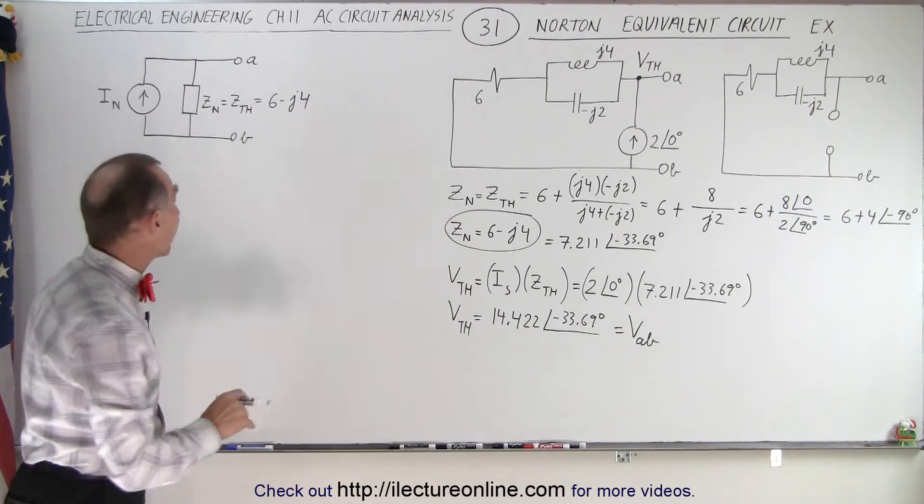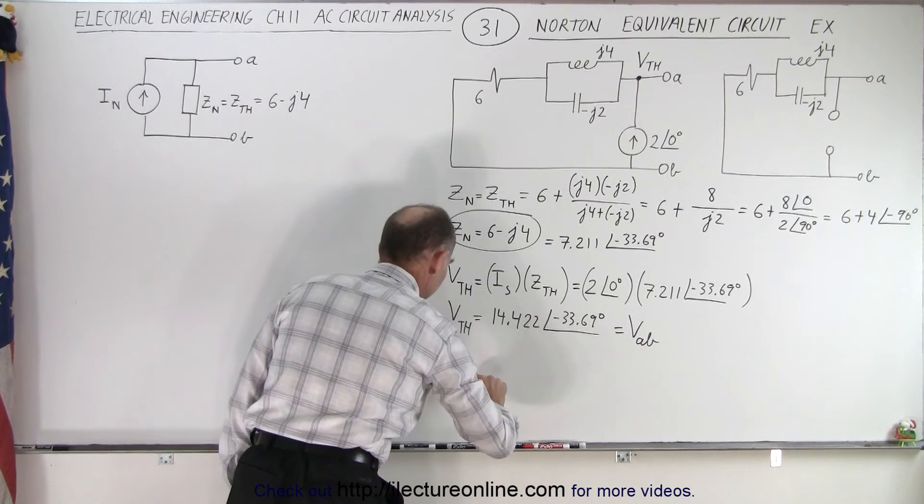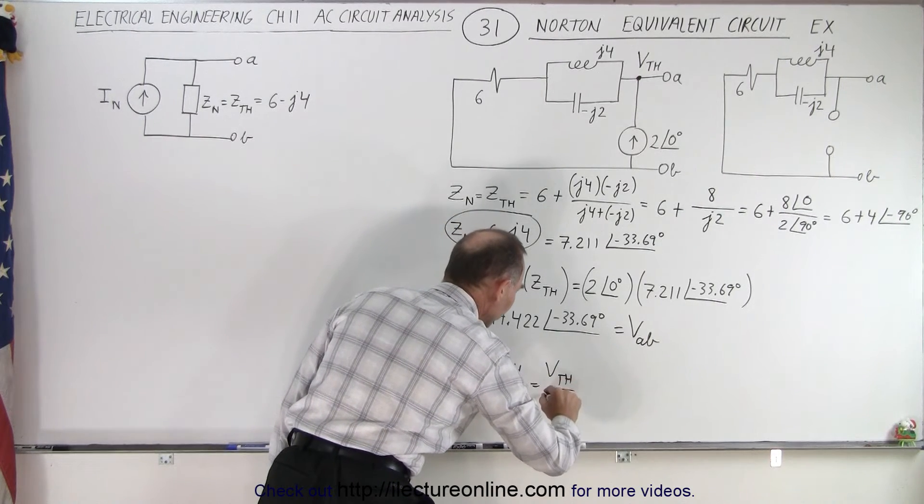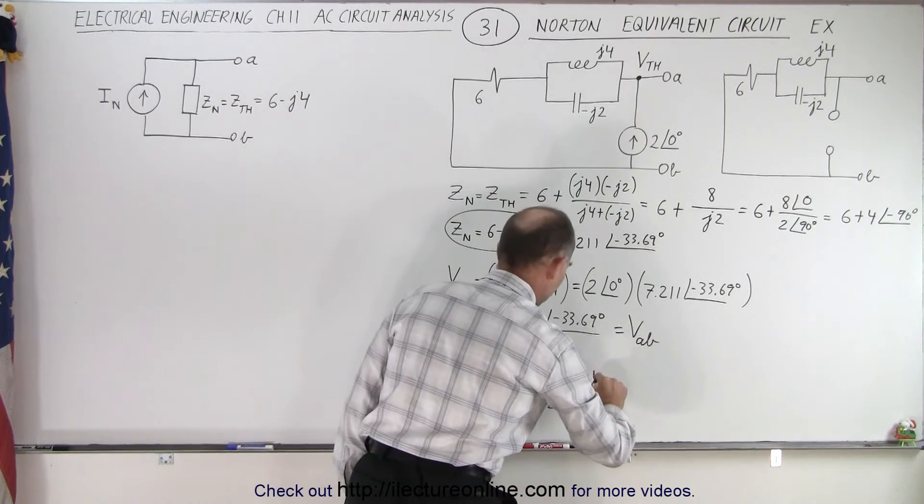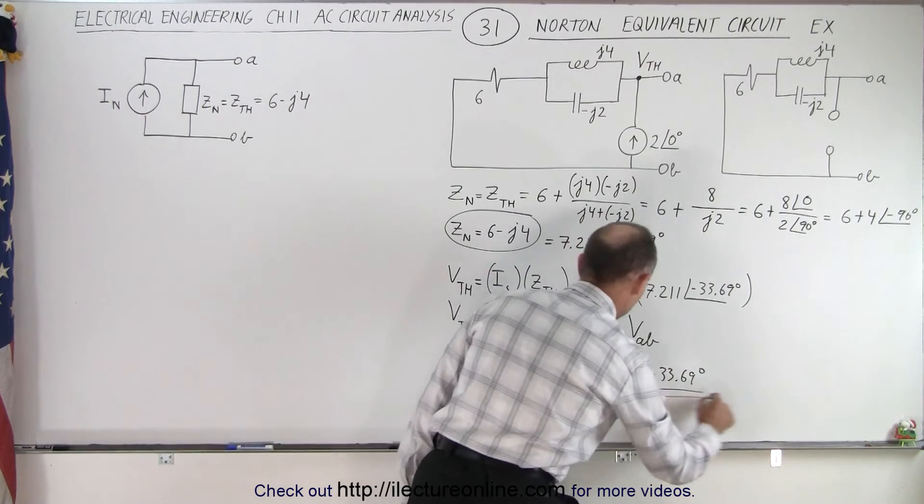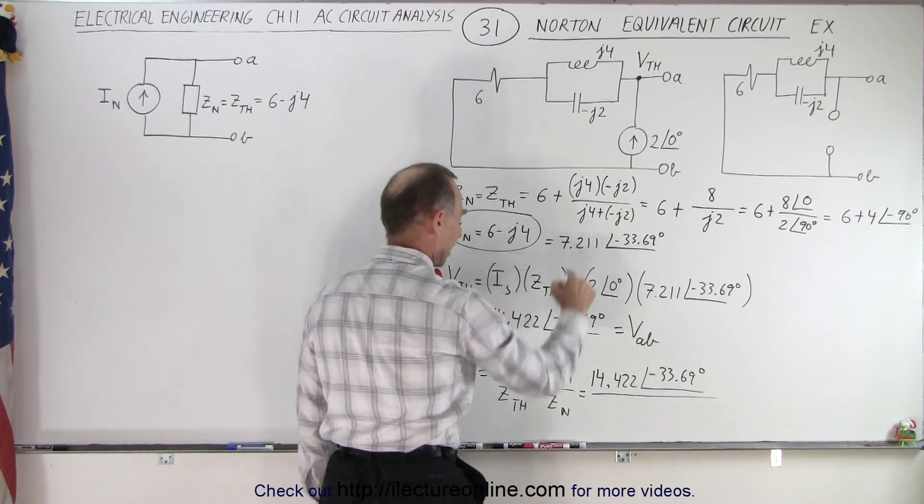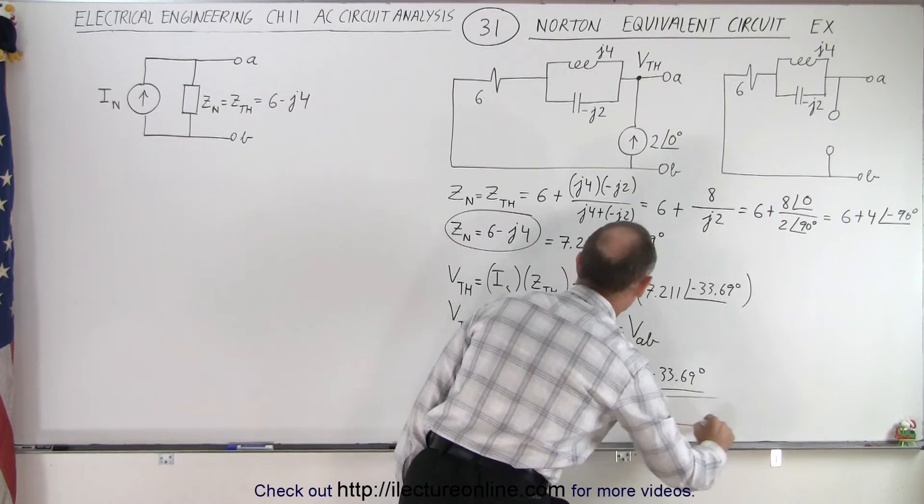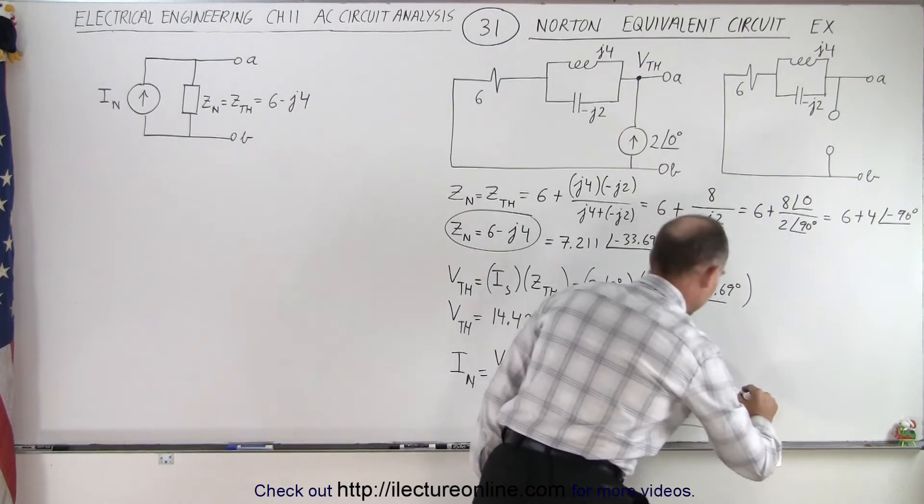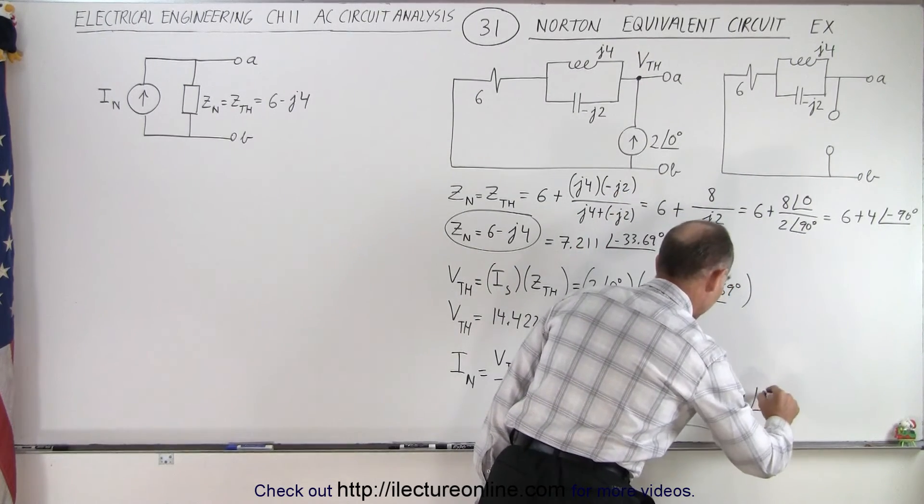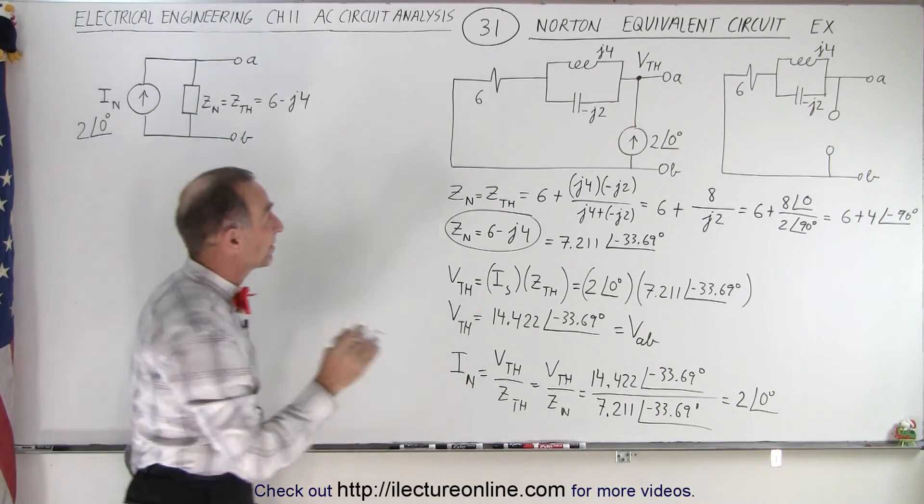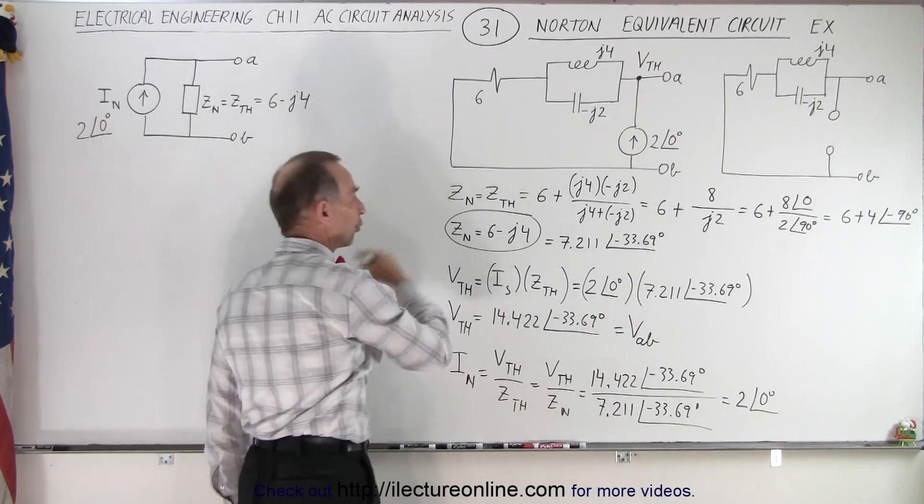Of course, that doesn't give us the Norton current yet. To find the Norton current, I_Norton equals the Thevenin voltage divided by the Thevenin impedance, which is the same as the Norton impedance. We take 14.422 with a phase angle of minus 33.69 degrees and divide it by 7.211 with a phase angle of minus 33.69 degrees. And notice that gives us exactly 2 with a phase angle of 0 degrees. That's the Norton equivalent current, which is interesting. It's the exact same current that we have in the source as our Norton equivalent circuit.